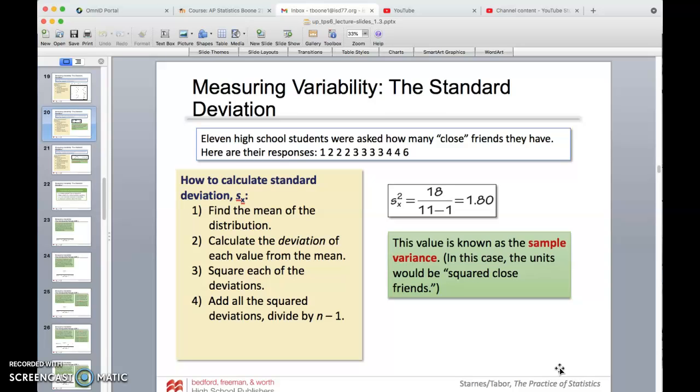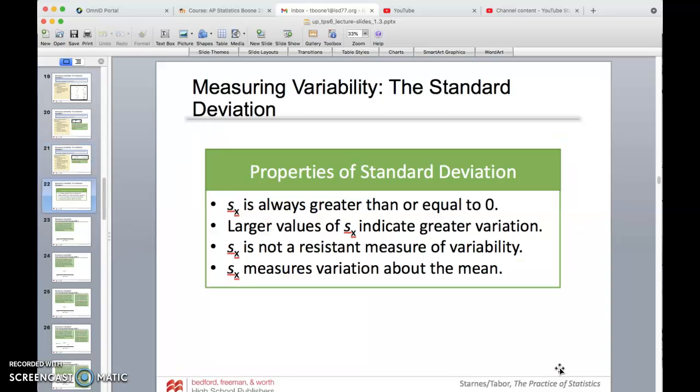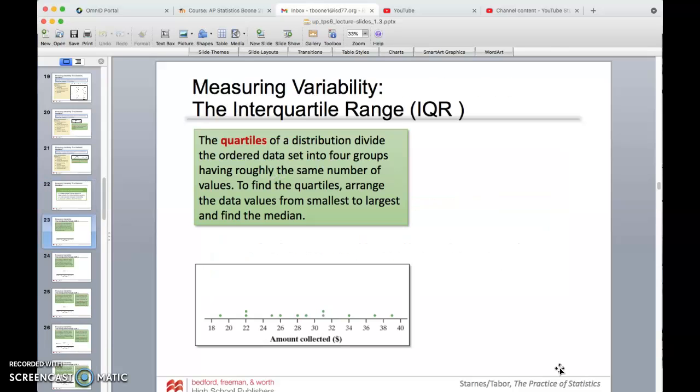That gives us the sample variance. That's 1.8. So now to get the standard deviation, we're just going to take the square root of that number, and we get 1.34. So that's kind of the typical distance that we are away from the mean when we do that. The smaller the number, that means that it's pretty not so variant. The bigger the number is, it means that there's more variation and whatnot. That number you get should always be greater than or equal to zero. Zero, of course, if there's no variation. It's not resistant to measures of variability because the mean is used, so that isn't. It measures the variation about the mean. Typically, how far can we assume we're going to be away from the mean on any given variable.